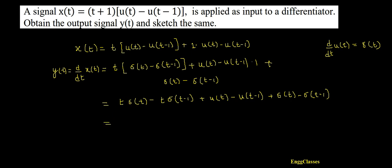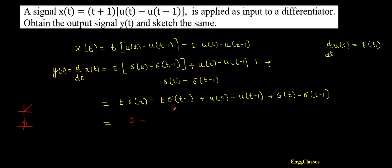Now, what is t·δ(t)? If we multiply t with the unit impulse δ(t), at t = 0 the value of t is 0, so t·δ(t) = 0. Therefore that term vanishes.